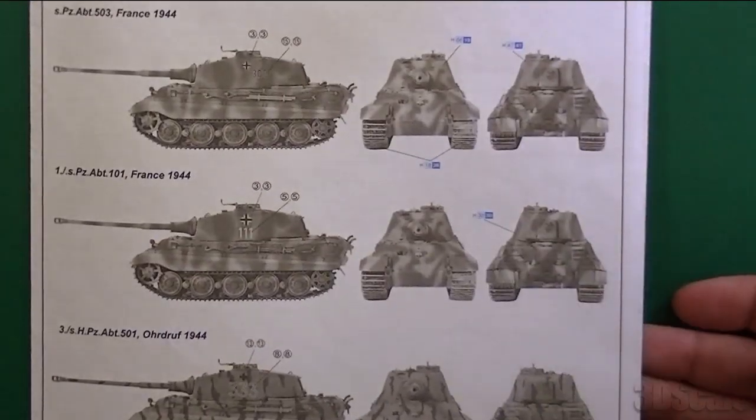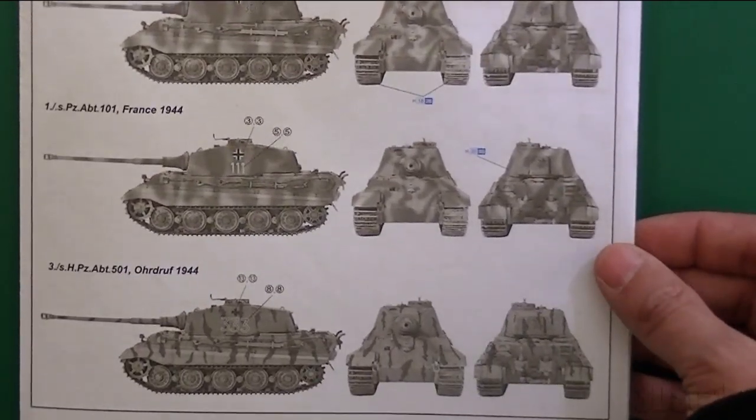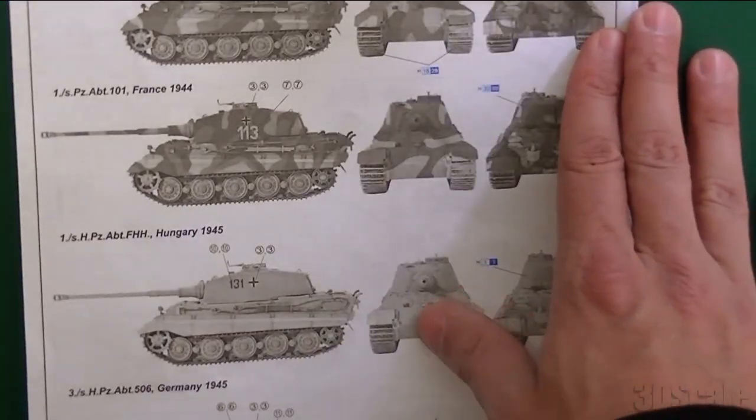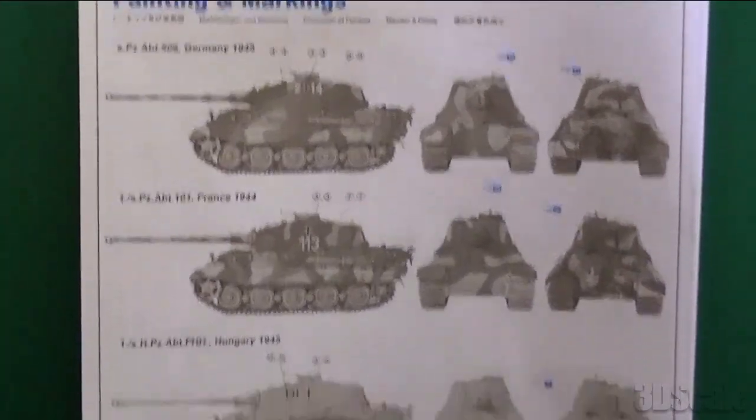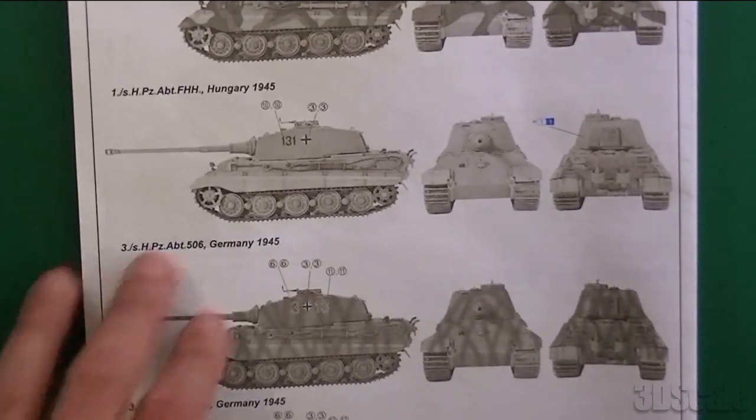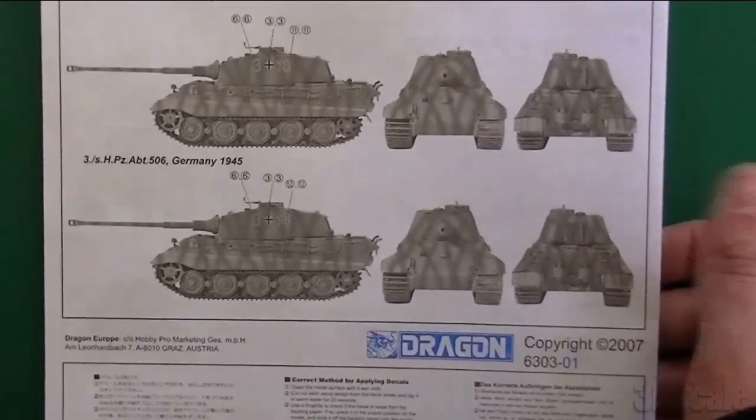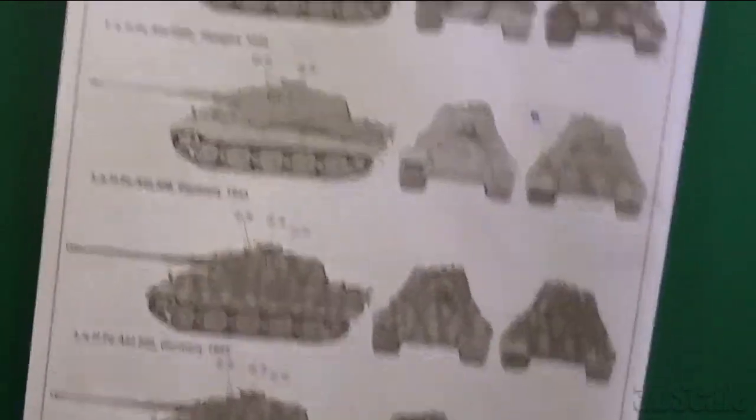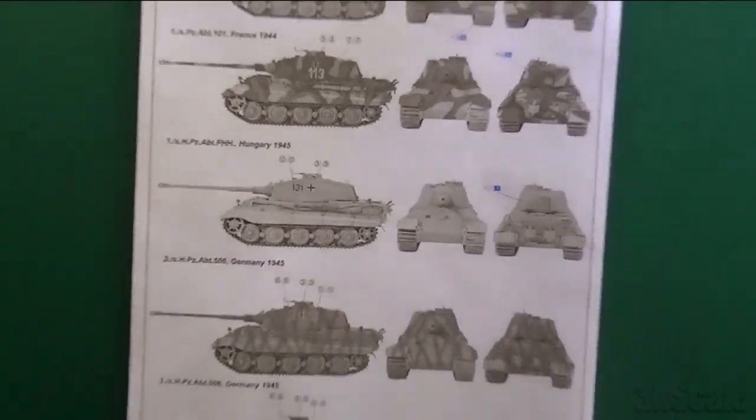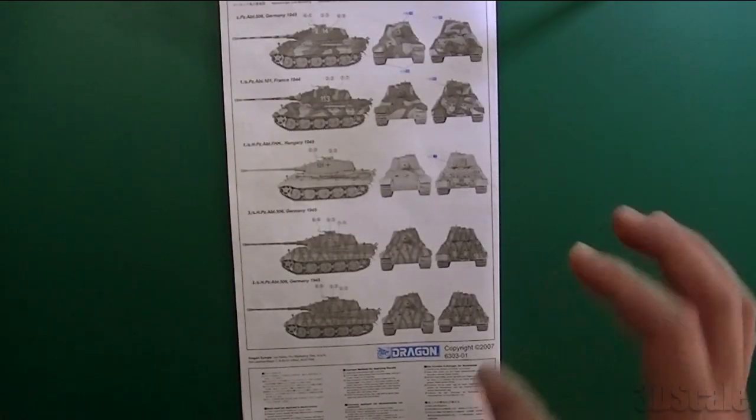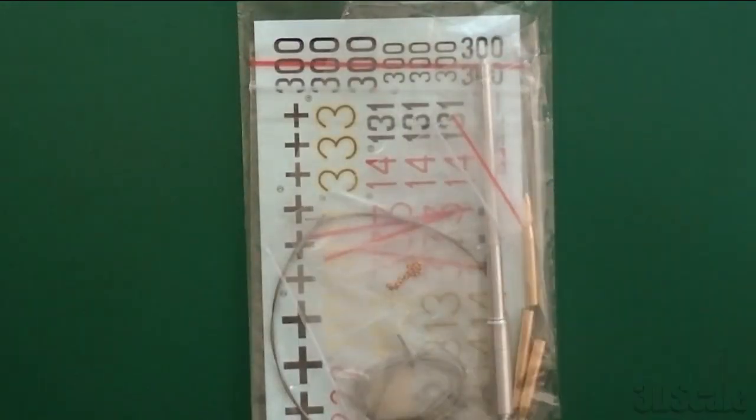Marking options. France '44, nothing fancy. Tritonal, standard issue King Tiger stuff. Germany in '45, France '44, Hungary '45. That's where Kurt Knispel was, I think. Lots of marking options. The decals are pretty substantial, not so much as they were in the older kits though. In the Battle of the Bulge kits, the decal number jungle is a little more substantial.